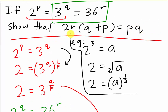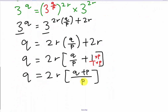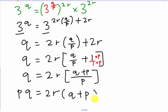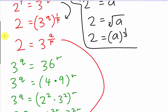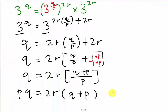I'm almost done because I want PQ on the other side. I just move P to the other side — it multiplies with Q — so I get PQ equals 2R(Q + P). The final answer is PQ equals 2R bracket Q plus P. Since the question asked me to show this, I write 'Shown'.